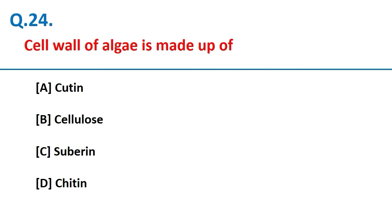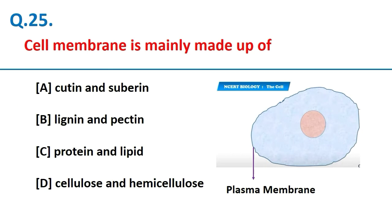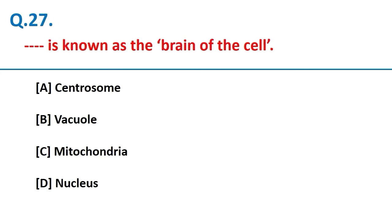The cell wall of algae is made up of cellulose. The cell membrane is mainly made up of proteins and lipids. The nucleus in a cell was discovered by Robert Brown, and the nucleus is known as the brain of the cell.